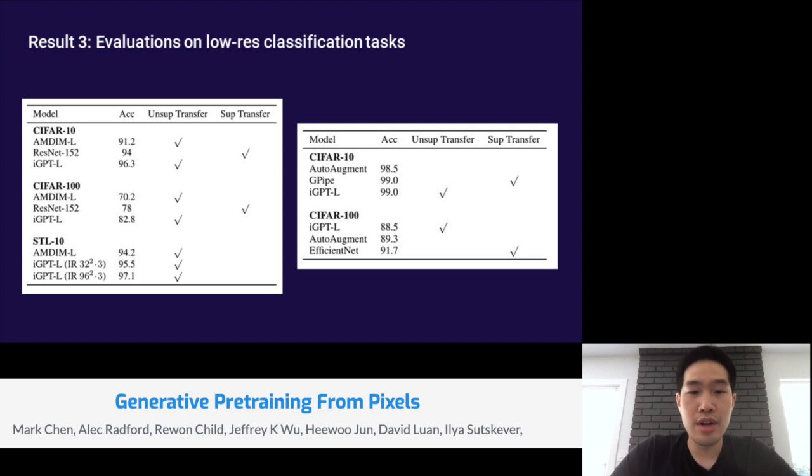Our third result consists of evaluations on low resolution classification tasks. Here we include two tables from our paper, which detail both performance in the linear probe setting and the fine tuning setting. In the linear probe setting, you can see that we achieve state-of-the-art across the entire spectrum of transfer learning approaches. I want to highlight here CIFAR-10 results, where our model achieves 96.3%, which outperforms AMDIM, which is pre-trained on ImageNet without labels, a setting that's equal to ours, and a ResNet 152, which was pre-trained on ImageNet with the labels.